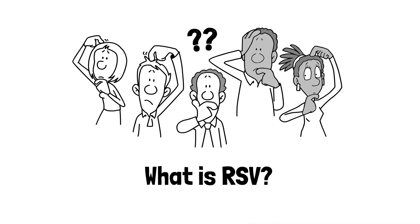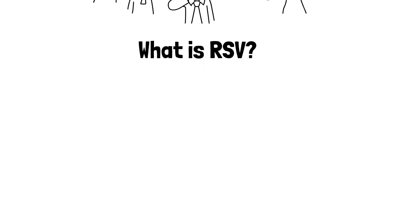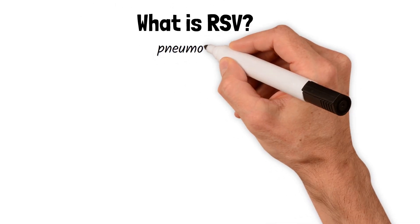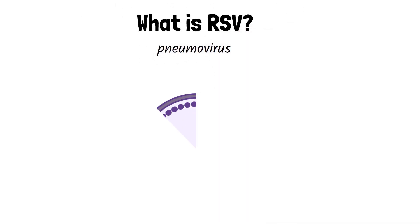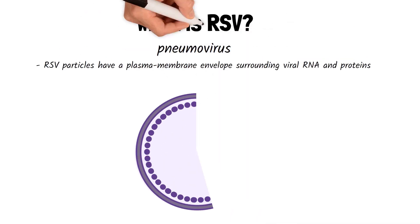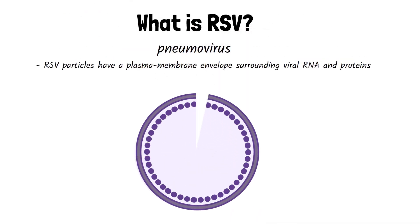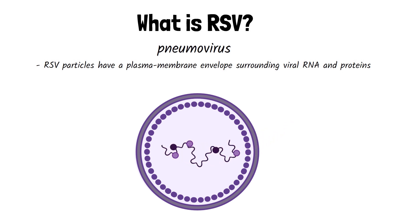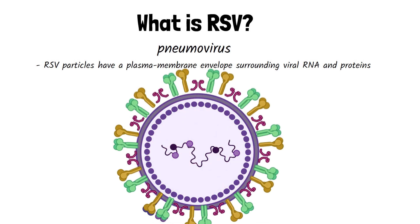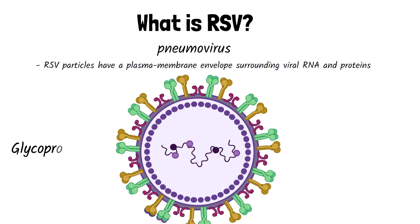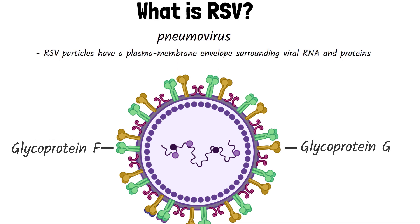So what is RSV? RSV is a pneumovirus. RSV particles have a plasma membrane envelope surrounding viral RNA and proteins. Two proteins that extend out from the envelope, glycoproteins F and G, play important roles in infection.